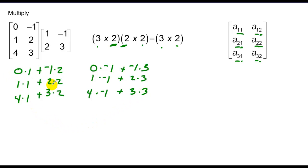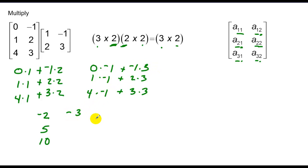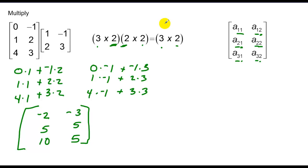Now we'll take and do all our products and sums. That's 0 and negative 2; then 1 and 4, which is 5; then 4 and 6, which is 10; then 0 and negative 3, which is negative 3; then negative 1 and 6, which is 5; and negative 4 and 9, which is 5 again. Notice dimensions: 3 rows, 2 columns.